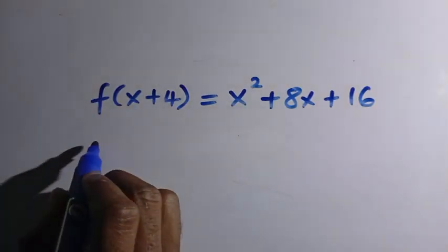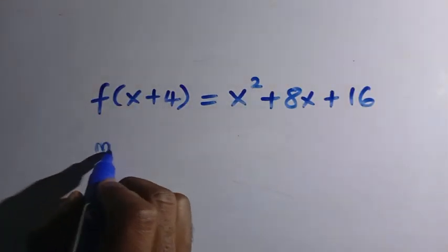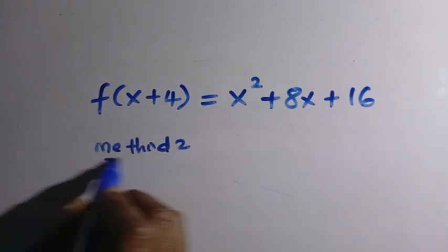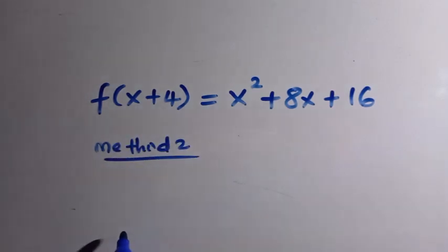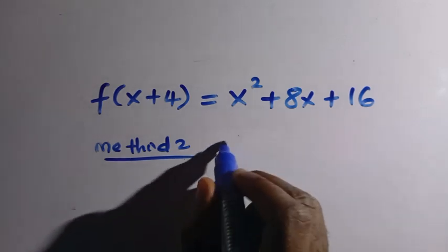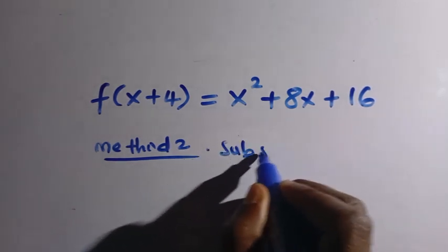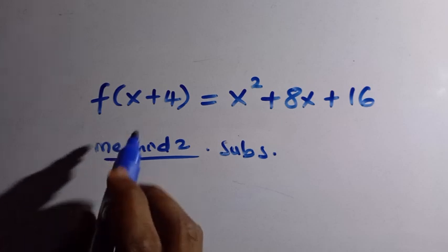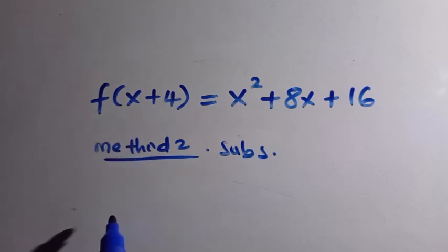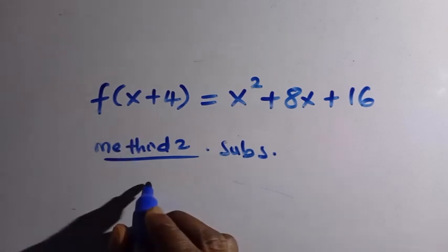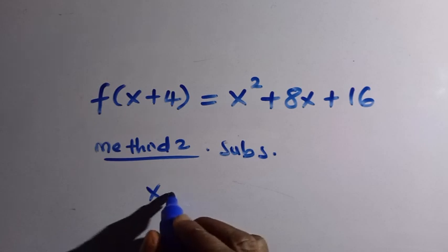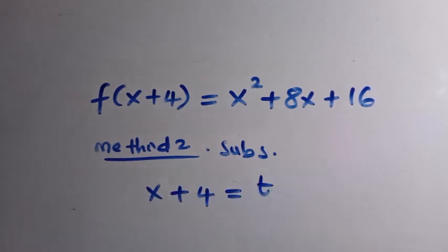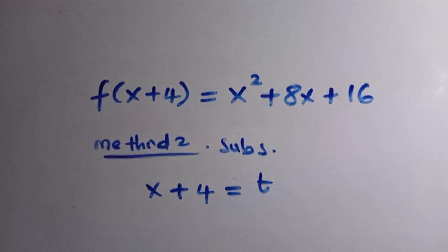For the second method we are going to apply substitution. We call this the substitution method. We have x plus 4 as our domain. Suppose we let x plus 4 equal t — we call this a t-substitution.